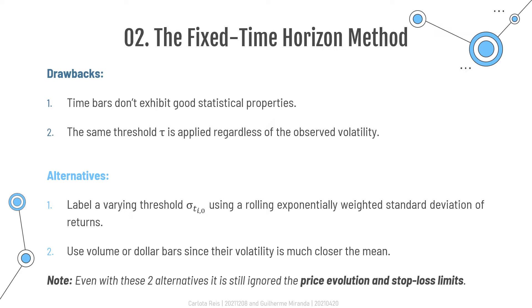First, as discussed in the previous chapter, time bars — which are the most used type — do not exhibit good statistical properties. Second, the threshold TAL, being a constant value, does not take into account observed volatility. These two factors lead to labeling errors being very common. Two better alternatives are labeling using a varying threshold estimated using a rolling exponentially weighted standard deviation of the returns, and using volume or dollar bars instead of time bars, as their volatilities are much closer to the mean.